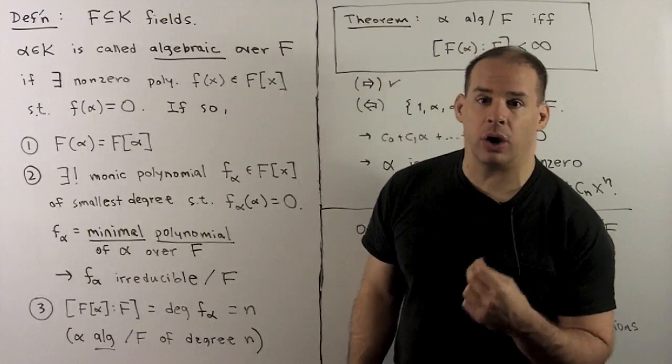We've seen one direction, as stated above. For the other direction, suppose we have finite degree — so this is a finite dimensional vector space over F. Consider the elements one, alpha, alpha squared, and so on. Because this is a finite dimensional vector space, the set must be linearly dependent over F. That means we have some relation, which says alpha is the root of some non-zero polynomial with coefficients in F — so alpha is algebraic. That gives our theorem.